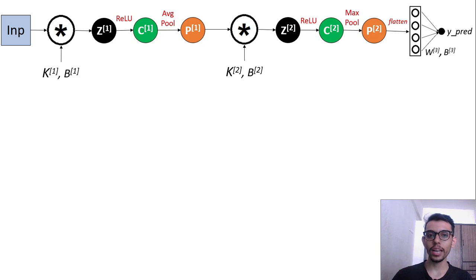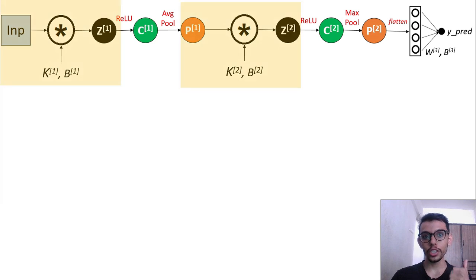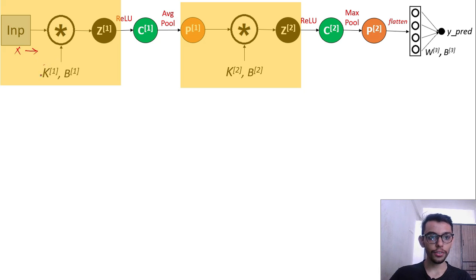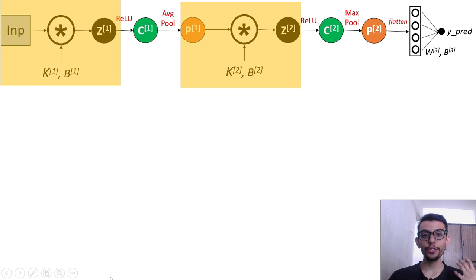Welcome back — this is Jay Patel and this is Part 2 of backpropagation in CNN. In Part 1 we saw backpropagation for a small unit which was just the convolution operation. In this video we will look at backpropagation for the entire CNN architecture. In Part 1 we took input X, convolved it with filter K, added bias B to get output Z, and obtained del L by del K and del L by del B using del L by del Z.